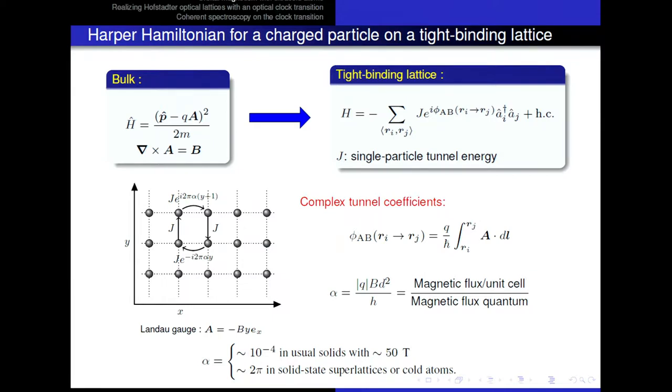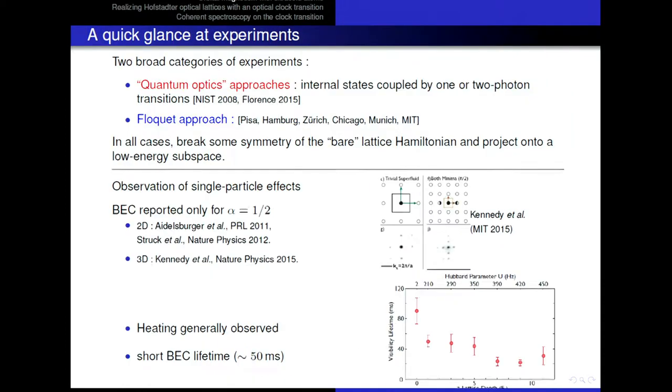When the magnetic flux appears by a unit cell, and when a particle makes a closed contour along this unit cell, then it will correspond to the phase picked up by the particle. And so alpha is related to the charge, to the magnetic field strength, and to the surface d squared of the unit cell. And so for that reason, in real solids, when the unit cell is at the size of one angstrom, typically, even for a very large field of 50 Tesla, alpha is always very small. And so this picture, this tight-binding picture, is not really relevant, and it basically reduces to the bulk picture. But now, either in some solid-state superlattices, so artificial structures, or with cold atoms, we can reach alpha on the order of 2π, basically, meaning that we can explore the full generality of this lattice Hamiltonian.